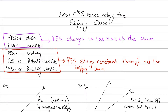Hi guys, in this video we're going to be discussing how the price elasticity of supply varies — that is, how it changes along the supply curve. We know that the supply curve is upward sloping, and we've also discussed what price elasticity of supply is. Students mostly know what PES is, how to make the diagrams, and what factors affect it, but this is a common MCQ question in AS that confuses students. Watch this video till the end and all your confusions will be clear.